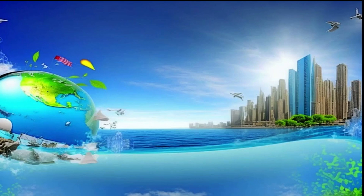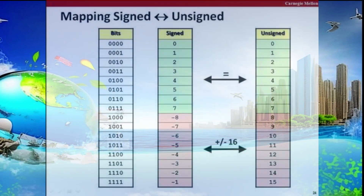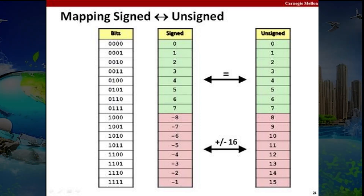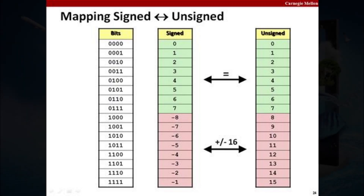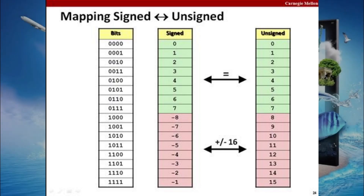In Java, you cannot really store unsigned numbers by default — you can only store signed numbers. In C#, I believe there's an sbyte, and I know there's a way to store 8-bit unsigned numbers in C#, but in Java you can only store signed numbers. If you're programming in Java, you probably don't really have to deal with that.